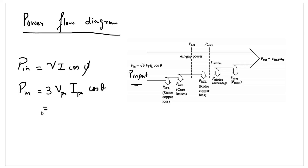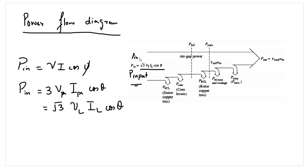Since the connections will be either in star or in delta, the phase voltage will be V_line/√3 for star, or the phase currents will be I_line/√3 for delta. Whether it's a star or delta connection, the real power equation will be √3·V_L·I_L·cosθ, where V_L and I_L represent the line voltage and line currents, and θ is the phase difference between voltage and current. For a single-phase induction motor it is simply V·I·cosθ.